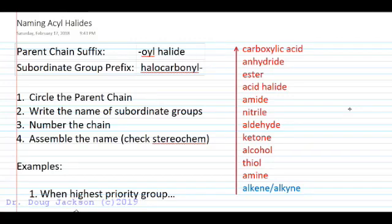Let's talk about naming acyl halides or acid halides. If the acid halide functional group is the highest priority group in our list, higher than all of these groups, we're going to name it with the suffix -oyl halide, like pentanoyl halide or heptanoyl halide. The parent chain suffix goes to the acid halide.